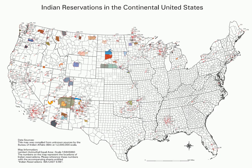The collective geographical area of all reservations is 56,200,000 acres (22,700,000 hectares), 87,800 square miles (227,000 square kilometers), approximately the size of Idaho. While most reservations are small compared to U.S. states, there are 12 Indian reservations larger than the state of Rhode Island. The largest reservation, the Navajo Nation Reservation, is similar in size to West Virginia.